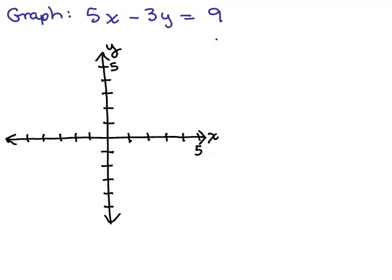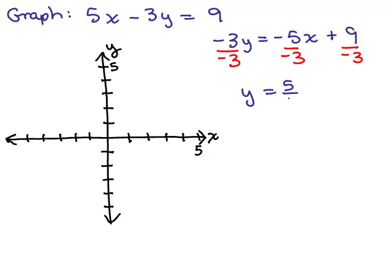I've got to subtract 5x from both sides and then divide by negative 3, which gives me y equals 5/3x minus 3. So the slope is 5/3 and b is negative 3.